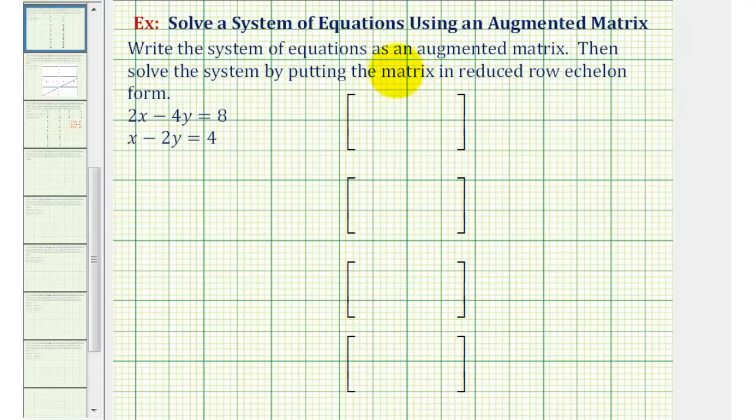We want to write the system of equations as an augmented matrix and then solve the system by writing the matrix in reduced row echelon form. The first thing we should recognize is that we have a system of two linear equations with two unknowns. So we'll have a two by three augmented matrix.